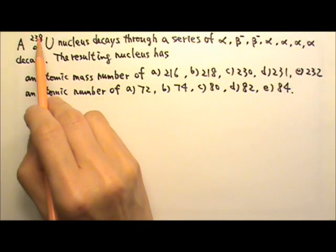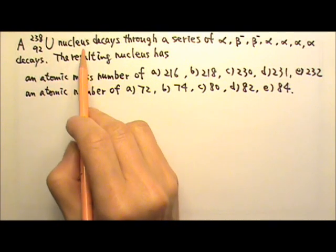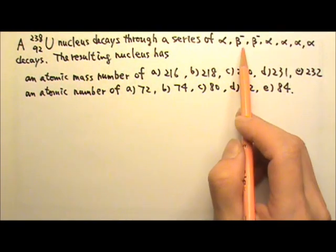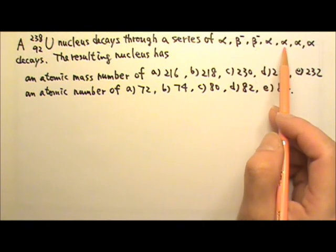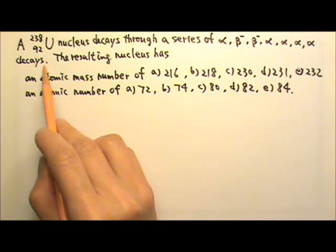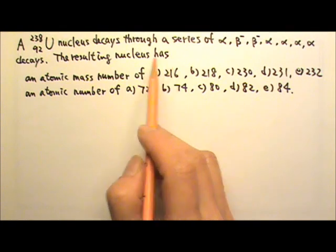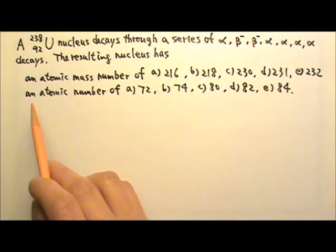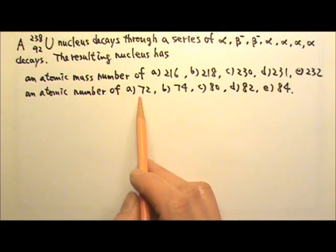A uranium-238-92 nucleus decays through a series of alpha, beta negative, beta negative, alpha, alpha, alpha, alpha decays. The resulting nucleus has an atomic mass number of which of these, an atomic number of which of those.